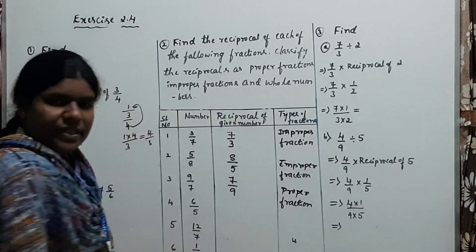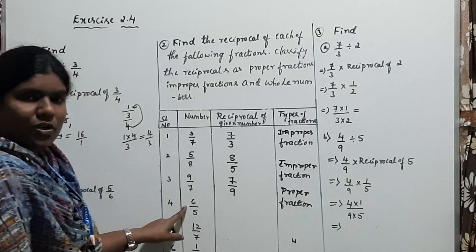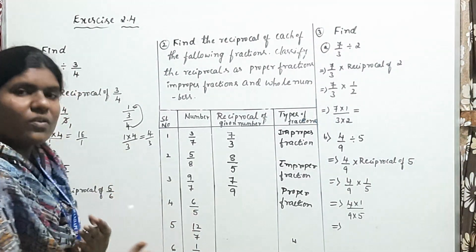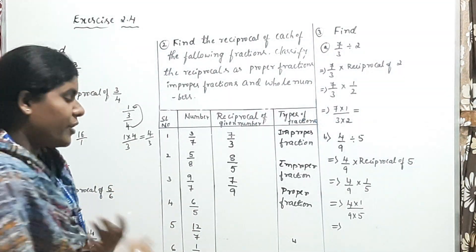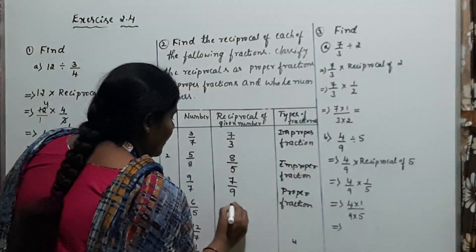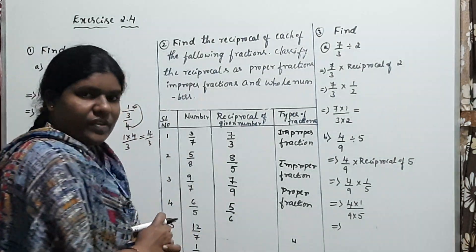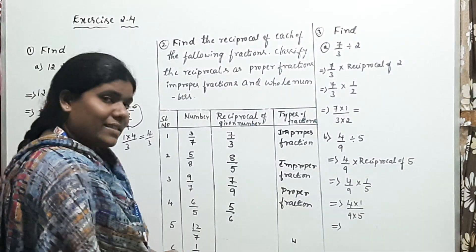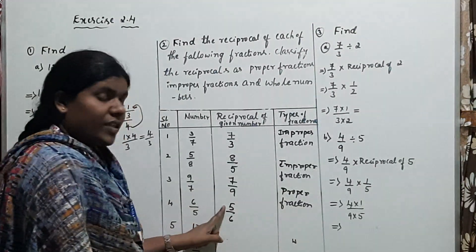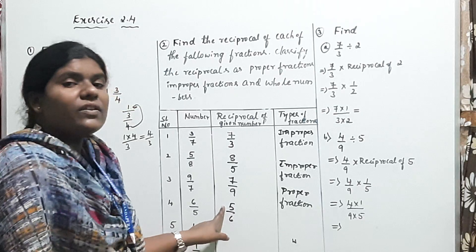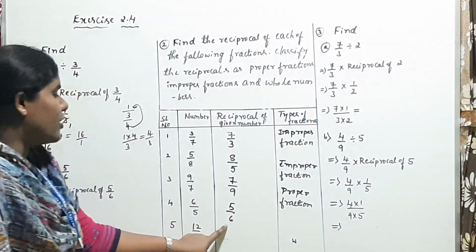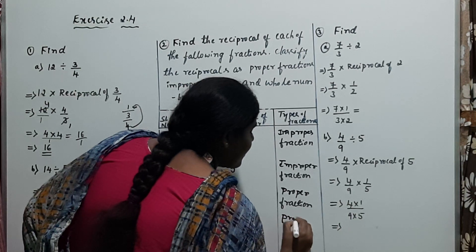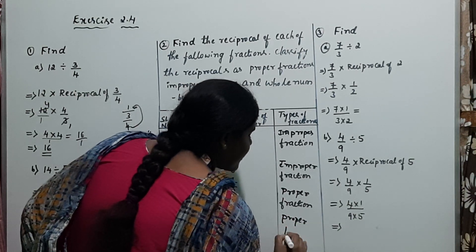Next, the fourth problem: 6/5 is given. The reciprocal of 6/5 is 5/6. Now, which type of fraction is this? Here the numerator value 5 is less than the denominator value 6. Therefore, this is called a proper fraction.